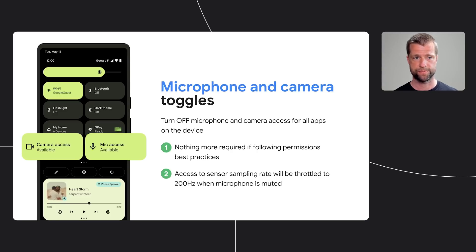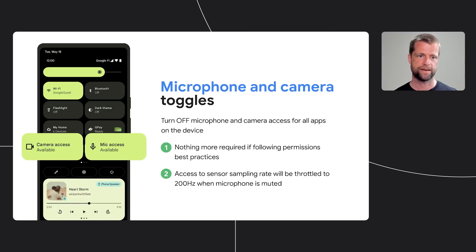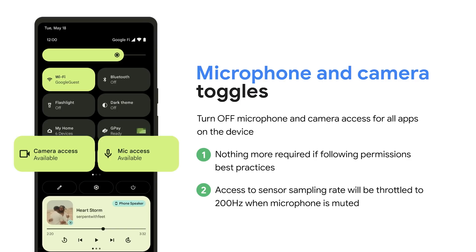In addition to location, microphone and camera are the most sensitive permissions. Aside from putting stickers on cameras or adding audio blockers to phones, today there is no guaranteed way for users to ensure no one has access to their mic and camera. That is about to change. In Android 12, we are adding two new controls which allow users to quickly cut off all access to mic and camera on the device. In case users launch an app that needs access to the sensors, they will be notified to quickly turn on the sensor. The system will take care of the end-to-end flow. Apps don't need to do anything differently. As part of this launch, we're also limiting motion sensor sampling rates to 200 hertz when the mic toggle is muted.